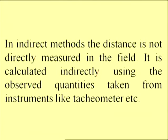In the indirect method, as the name suggests, distance will not be measured directly in the field. We will take some other observations and measurements, and then by using some formulae convert those observations into distance. That is done in tachymetry. A tachymeter is an instrument which gives us the distance directly using some formula, so that is the indirect method, which is also an optical method.